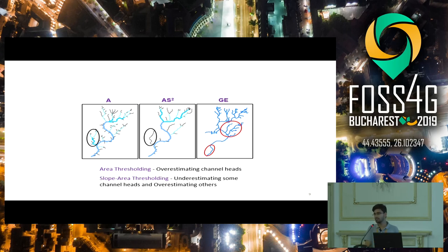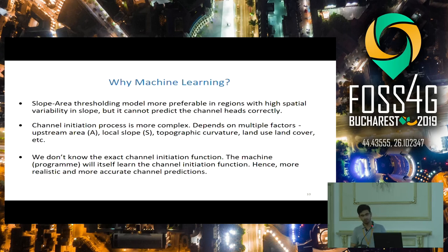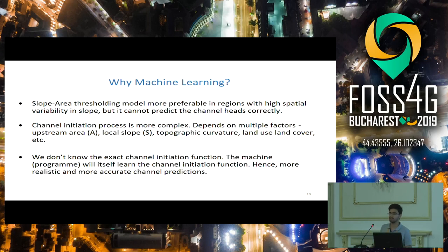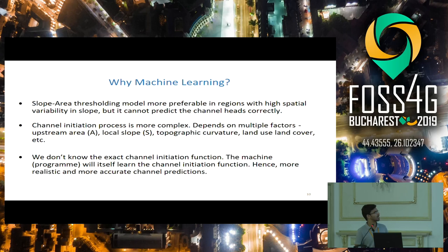Hence the need for machine learning — because we know that the channel initiation function not only depends on slope and area, but also on many other factors such as topographic curvature, land use, land cover, and many others. We do not know the exact channel initiation function or what combination of parameters should be used. So the idea is that the model itself will learn the channel initiation function and provide more realistic and accurate channel head locations.